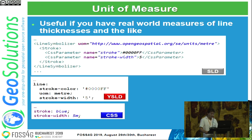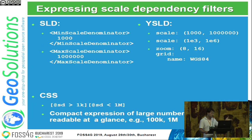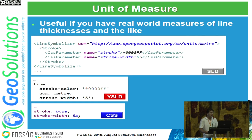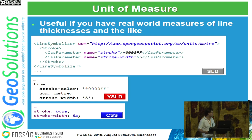GeoServer supports a unit of measure for your elements. By default, stroke-width of five means pixels, but you can specify meters or feet on the ground. In SLD you use a long URI: http://opengeospatial.org/se/units/metre. In YSLD it's a bit better: 'uom: metre'. In CSS it's even simpler: just '5m'. For MB styles, you only have the zoom levels of Web Mercator.